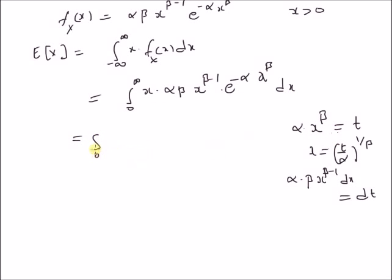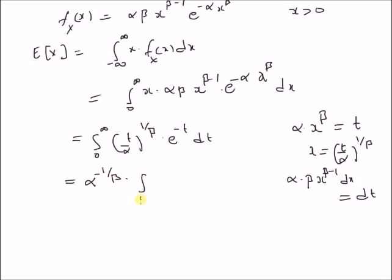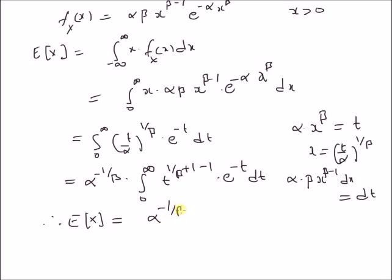The limits remain unchanged, that is 0 to infinity. Substituting, x becomes (t / alpha)^(1/beta), the term alpha * beta * x^(beta - 1) dx becomes dt, and e^(-alpha * x^beta) becomes e^(-t). This transforms the integral to alpha^(-1/beta) * integral from 0 to infinity of t^((1/beta + 1) - 1) * e^(-t) dt, which by definition is the gamma function of parameter (1 + 1/beta). Therefore, E[x] = alpha^(-1/beta) * Gamma(1 + 1/beta).